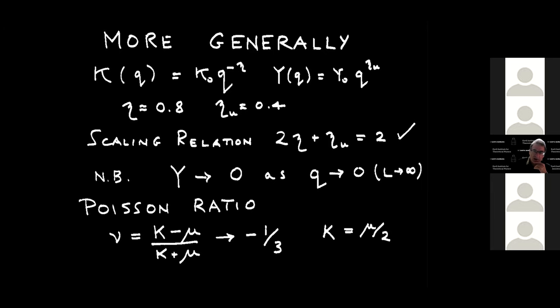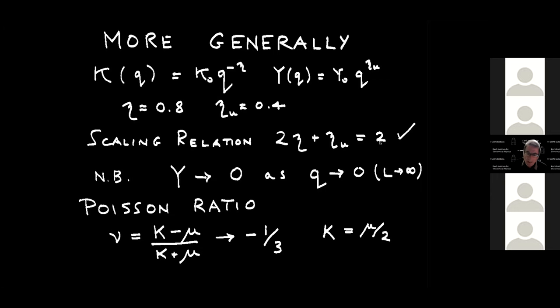More generally, if you do the same analysis for the elastic moduli, the Young's modulus has a scale dependence as well. These numbers have been calculated analytically and measured numerically. The exponent η for the running of the bending rigidity drops a little below one, and the Young's modulus has a positive exponent η_u, so it gets softer at larger length scales — which you also saw for crumpled paper, which you can stretch a little. These two exponents obey a scaling relation from rotational invariance: 2η + η_u = 2.